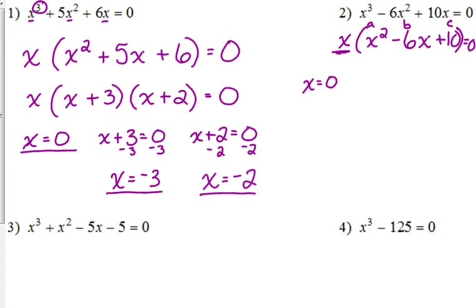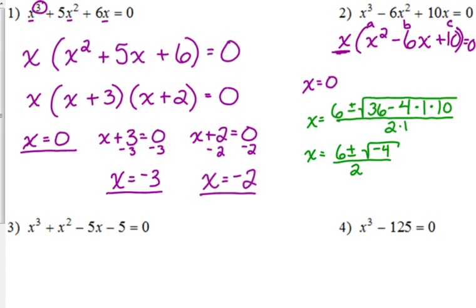So, our quadratic formula says x equals the opposite of b. b is already negative 6, so it becomes positive 6. Plus or minus the square root of negative 6 squared is 36. Minus 4 times a is 1. Times c is 10. All of that is over 2 times a, which is 1. So, that is 36 minus 40, which is negative 4. What happens when we have a negative under the square root? It comes out as i, and it's 4 or perfect square? Yeah. The square root of negative 4 is 2i.